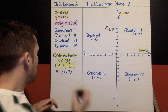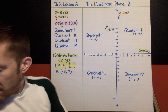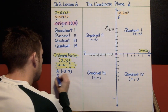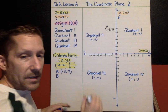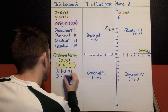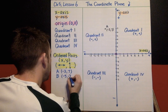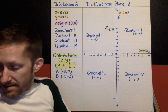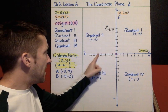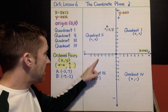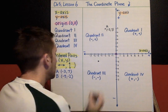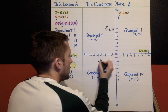Let's do point B, and we'll put that at negative five, comma, negative two. Following this guide: negative five is the x-coordinate, negative two is the y-coordinate. That's where point B belongs.